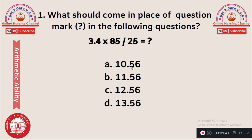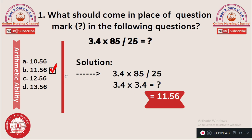Options: A) 10.56, B) 11.56, C) 12.56, D) 13.56. When you divide 85 by 25, it gives 3.4. So 3.4 × 3.4 gives 11.56. Option B, 11.56, is the right answer.